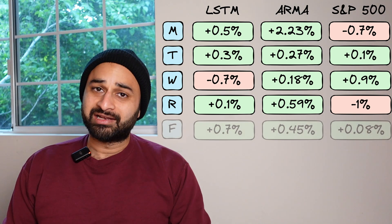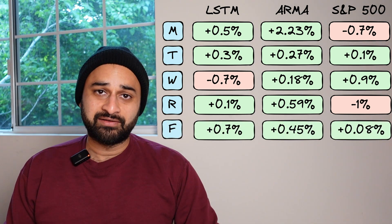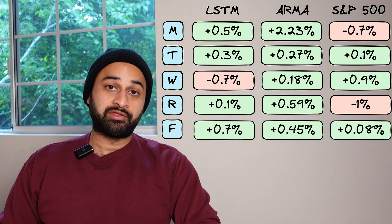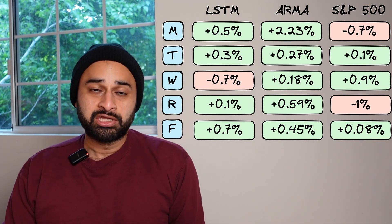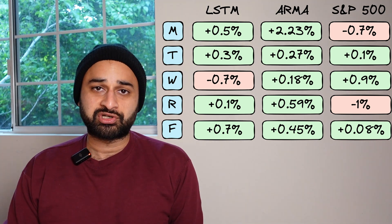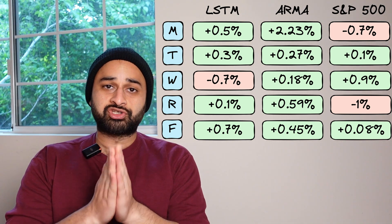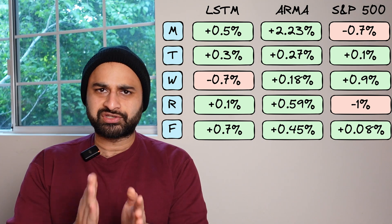And finally, getting into Friday, the last day of the experiment, we see this is a day where the LSTM model actually shines. It gives you a 0.7% return. The ARMA model also does pretty good, gives you a 0.45% return. And again, they are both destroying the market, which was more or less flat, just a 0.08% return.